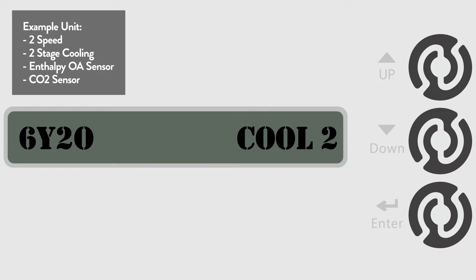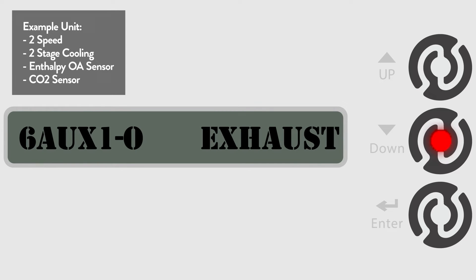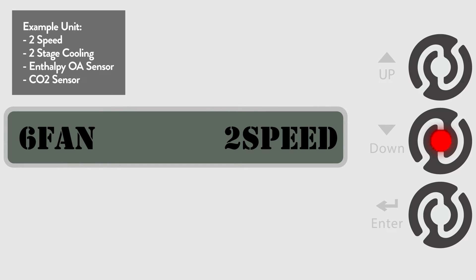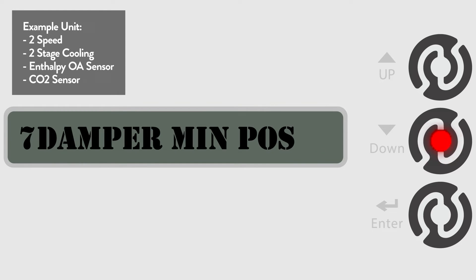Let's go to 6FAN, which sets the unit's fan speed. The default is 2Speed, and for this video we will leave it there. But it can be changed to single speed, 2Speed, 3Speed, or VFD for variable speed if needed. Now we are going to go on to the controller's 8 Run State menu.